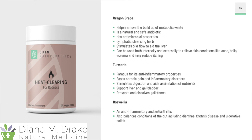Oregon grape is also in this formula — naturally antimicrobial, which is great. It has turmeric, famous for its anti-inflammatory properties — it eases chronic pain and inflammatory disorders, stimulates digestion, aids the assimilation of nutrients, supports the liver and gallbladder, and prevents and dissolves gallstones. It also contains boswellia, which is an anti-inflammatory and anti-arthritic that also balances conditions of the gut including diarrhea, Crohn's, and ulcerative colitis.